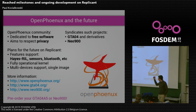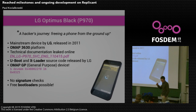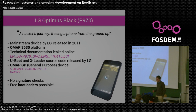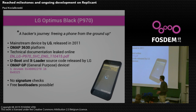Now mostly what I wanted to talk about today — that's the LG Optimus Black. Over the last few months I've written a series of blog articles called 'A Hacker's Journey: Freeing the Phone from the Ground Up.' It's all about this device, the LG Optimus Black, which was released by LG back in 2011. It has an OMAP3 platform, just like the GTA04. Technical documentation leaked online about it, giving you basically all the electrical wiring of the device and many relevant information — really great.